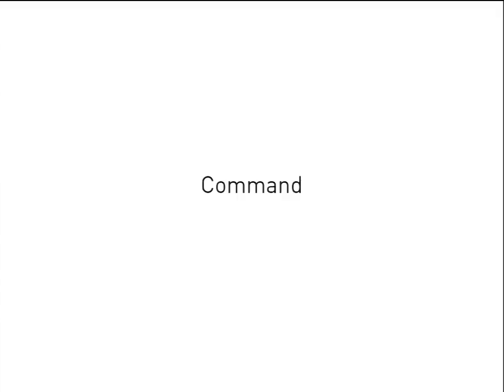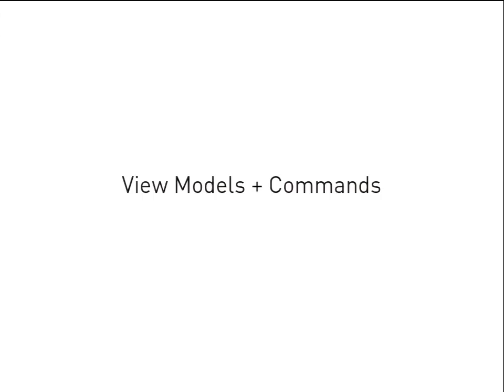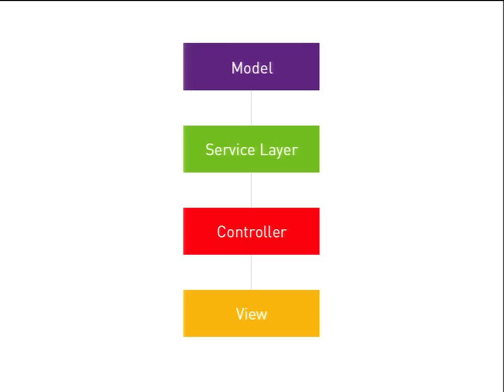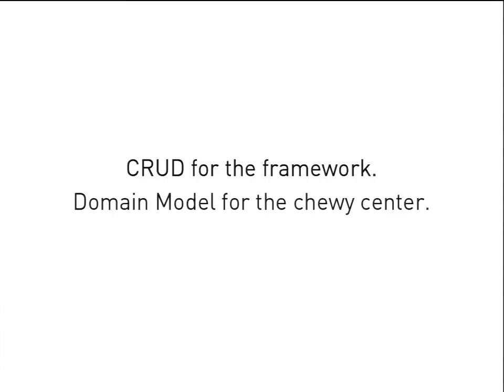Commands in general: fewer dependencies per class, more layers but simple layers, and very, very easy to test — we're cutting this stuff down to its core. This is not an either-or scenario: I can use view models and commands at the same time. In fact, that gives us complete isolation: every time I want to make a write, I shoot a command into the service layer; every time I want to make a read, I get a view model back. One of the things I like most about this approach, for PHP developers especially, is that it gives us CRUD for the framework but domain model for the chewy center.